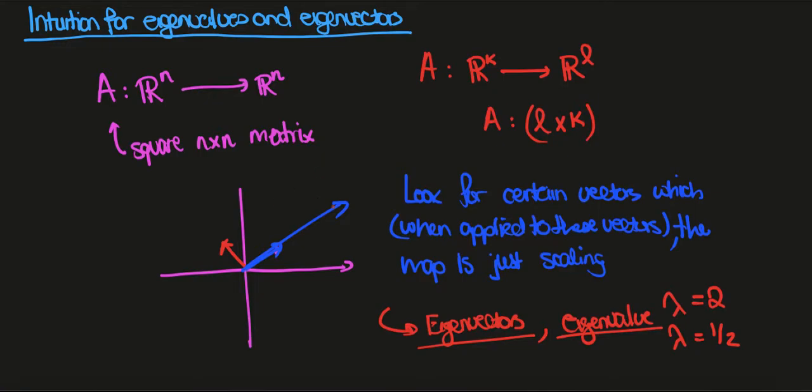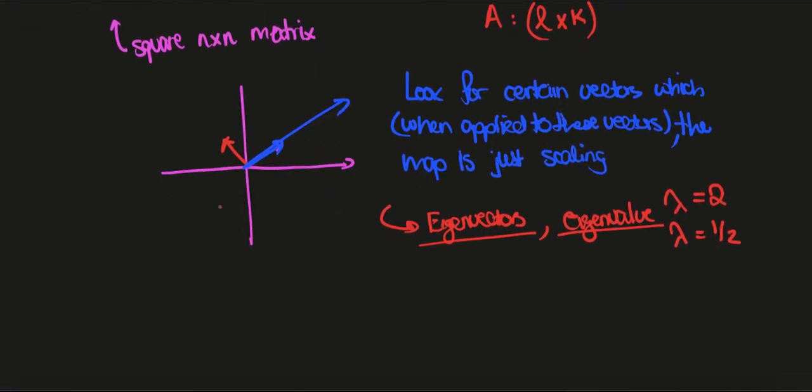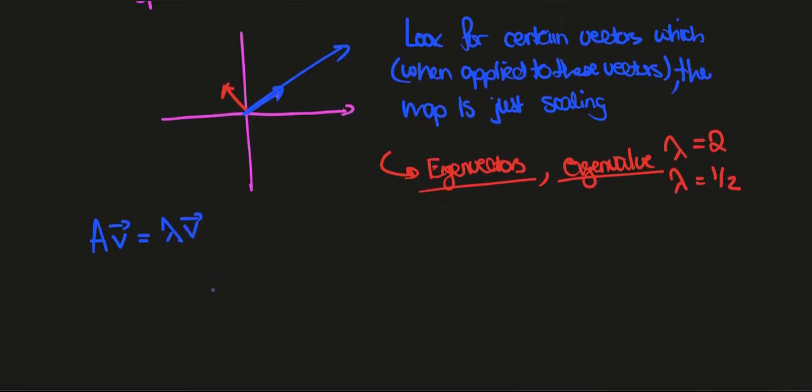So when you're trying to solve for these eigenvalues and eigenvectors, what you really want to do is look for all solutions v for which Av is equal to lambda v, where lambda is just a real number and that's the common notation for the eigenvalue.